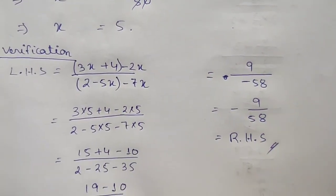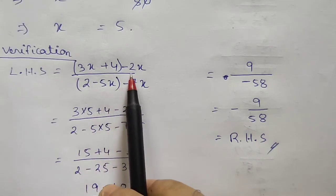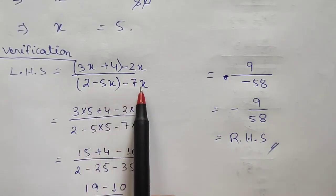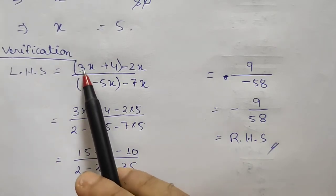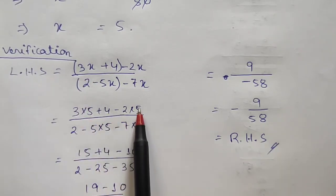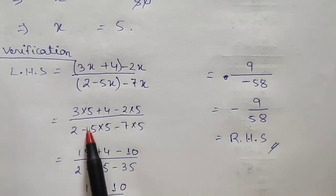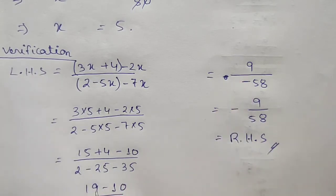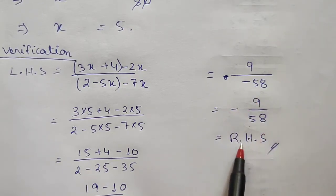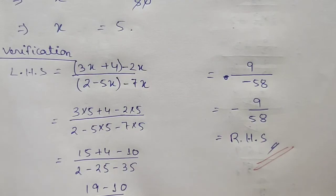Verification for question 4: LHS = (3x + 4 - 2x) / (2 - 5x - 7x) with x = 5. Substituting: numerator = 15 + 4 - 10 = 9, denominator = 2 - 25 - 35 = -58. So LHS = 9/(-58) = -9/58, which equals RHS. Therefore x = 5 is verified.